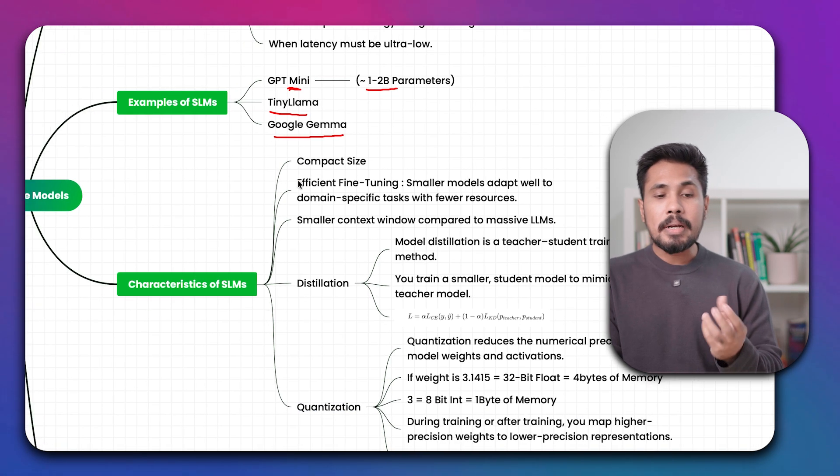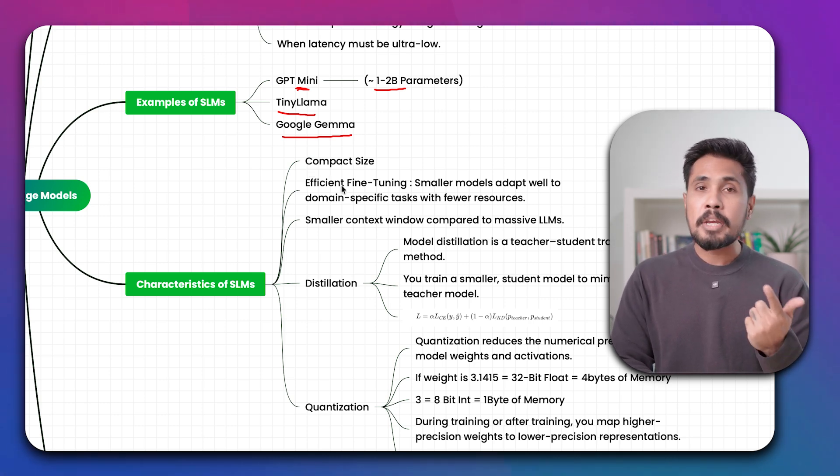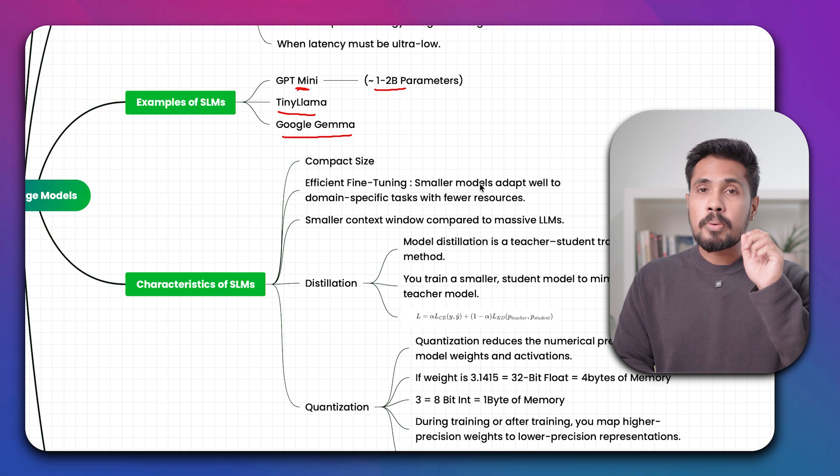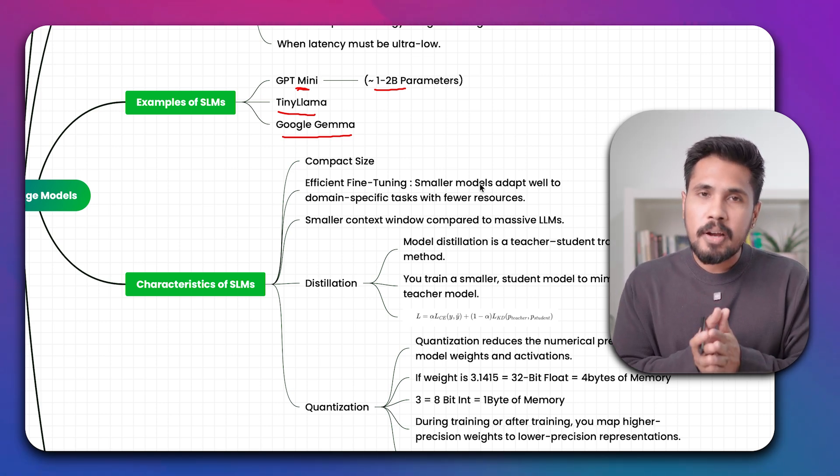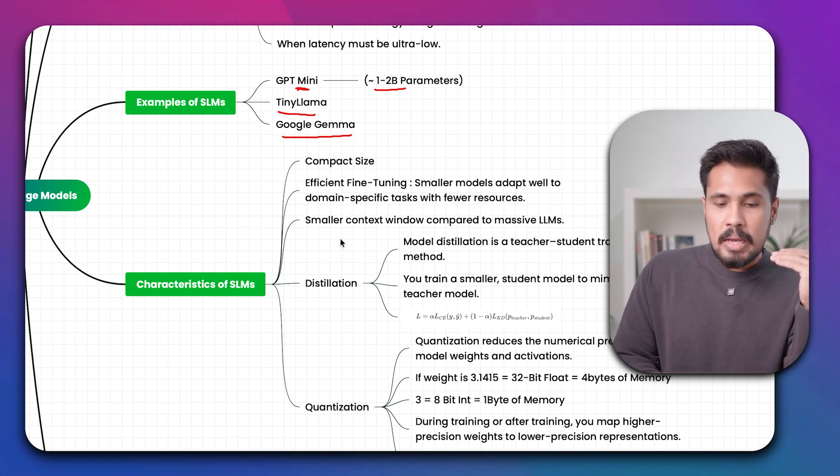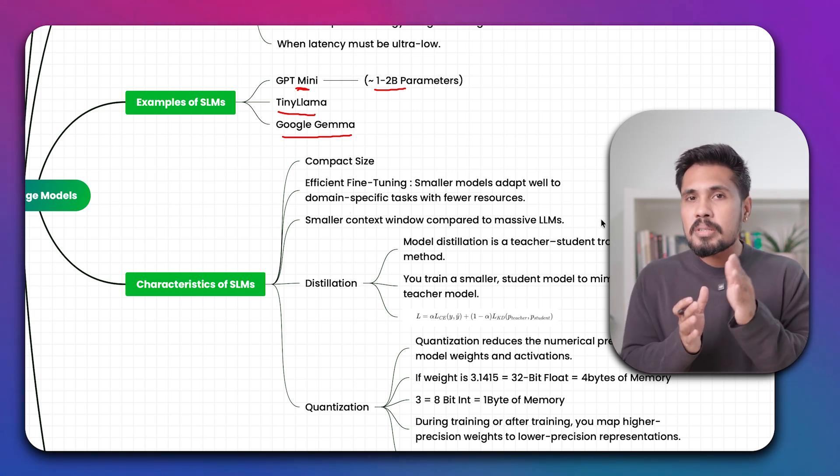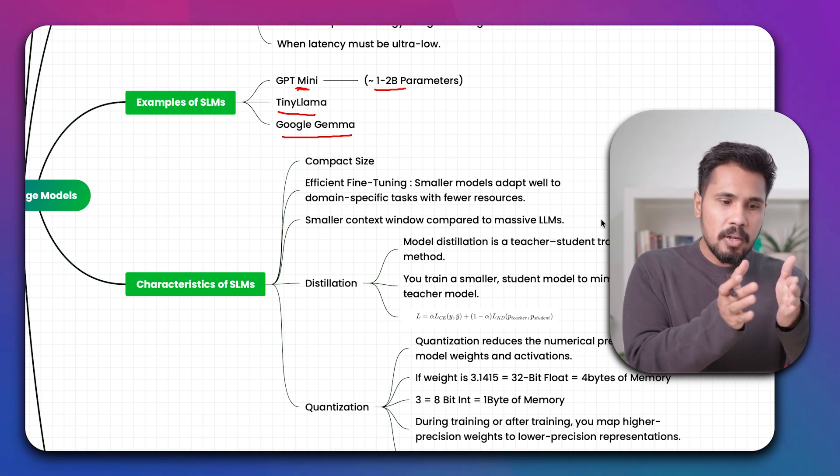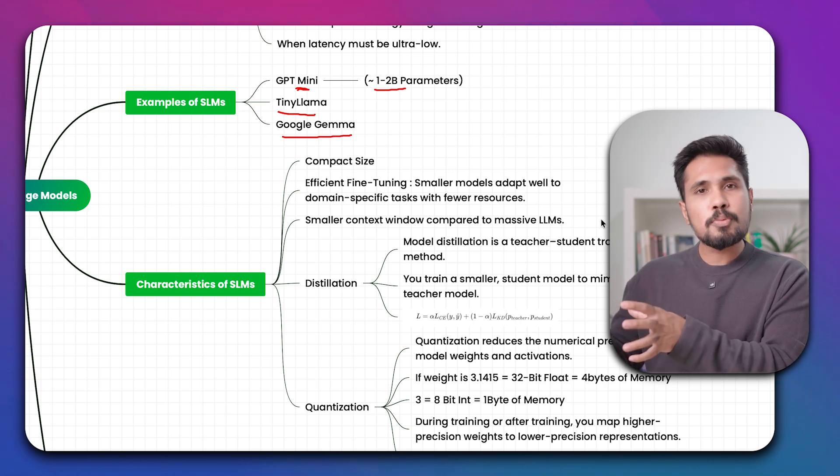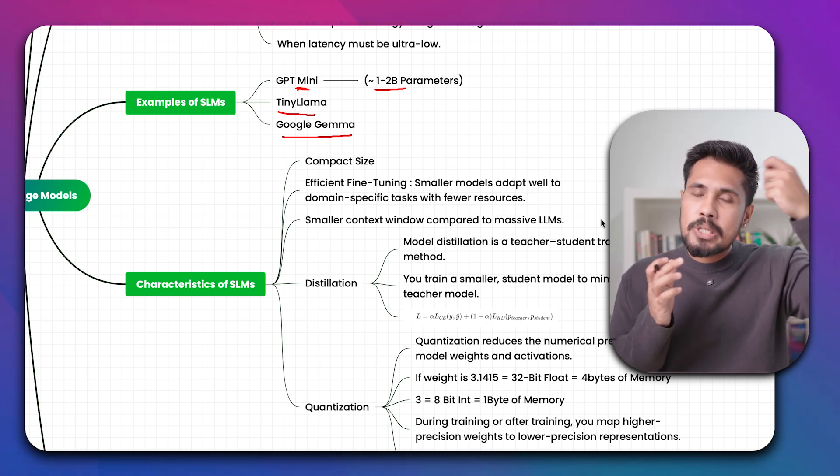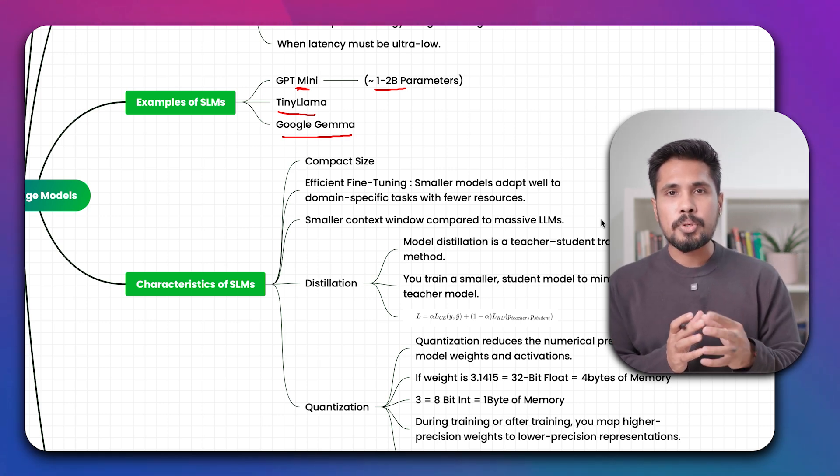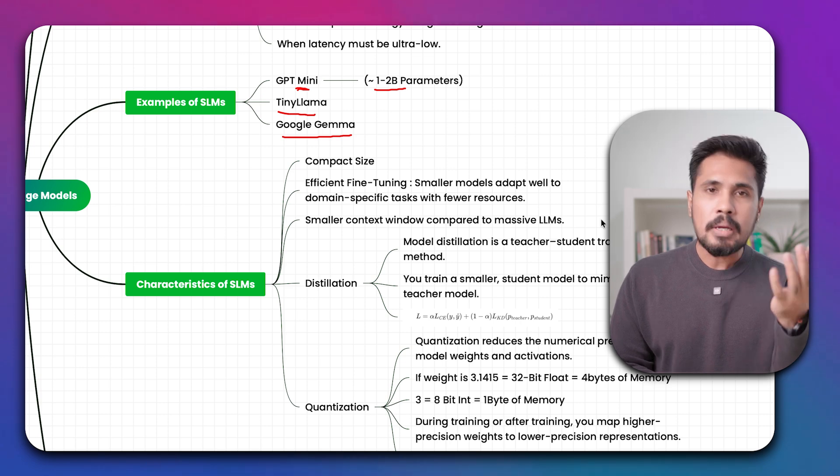What are the characteristics of any SLM? It needs to be compact size, it needs to be lesser. We need to do efficient fine-tuning. Smaller models adapt well to domain-specific activities, so we are able to achieve better fine-tuning. Instead of fine-tuning a big language model, if you fine-tune a smaller language model, it's going to have better performance. And smaller context window compared to massive LLM. This is a disadvantage. Small language models have smaller architecture, going to handle smaller data. When it handles smaller context window, the ability to understand and generalize is going to be less.